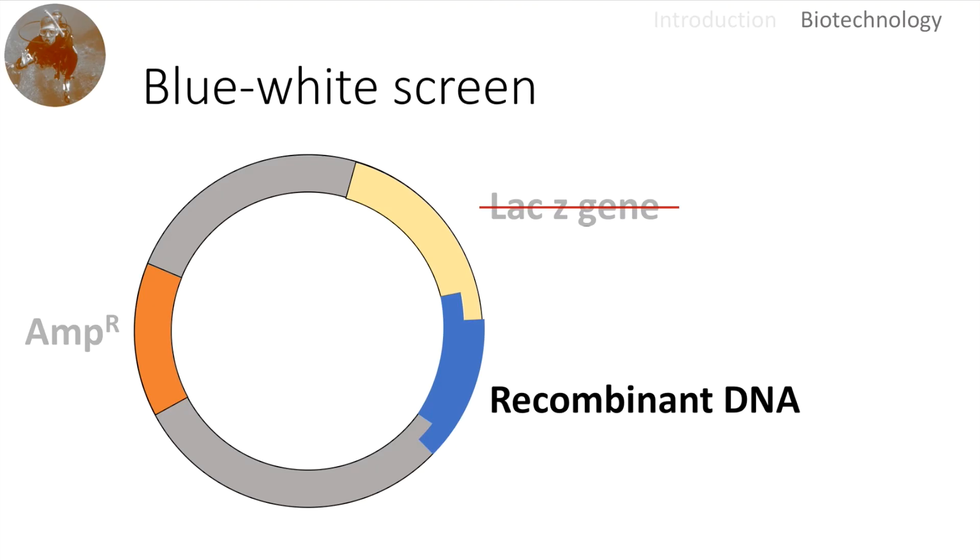We remember from the introduction that if we place bacteria that have a functional LAK-Z gene, a functional beta-galactosidase on X-gal plates we should expect blue dots. But since the LAK-Z gene is missing here what we will see is white colonies.